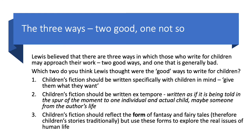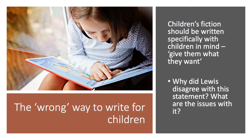Which of those three ways do you think Lewis thought were the right ways to write for children? The wrong way to write for children, according to C.S. Lewis, is to write specifically with children in mind — in other words, to give them what you think they want. Can you remember from your lesson, or can you think now, why Lewis felt that children's fiction shouldn't be written specifically with children in mind? Because surely that would make sense on the surface — have a think about that statement. What are the issues with it?